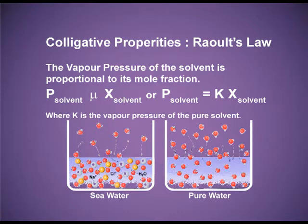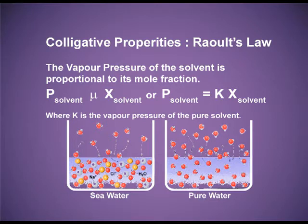In figure B, we have pure water — there is no salt. So on the surface we have totally the water molecules and they are getting a greater chance to escape and to convert into water vapour. Now you can compare the two figures and understand that there will be a lowering in the vapour pressure when a non-volatile solute is mixed.